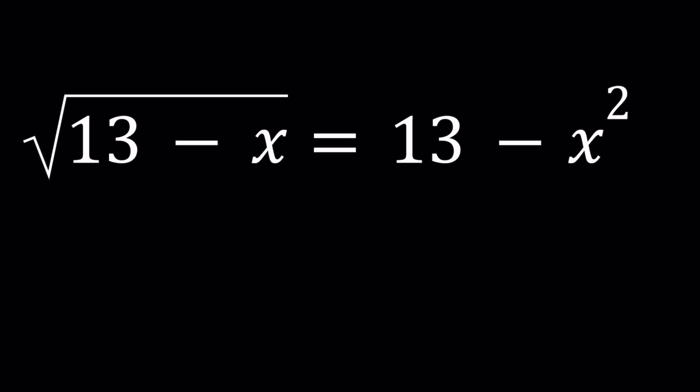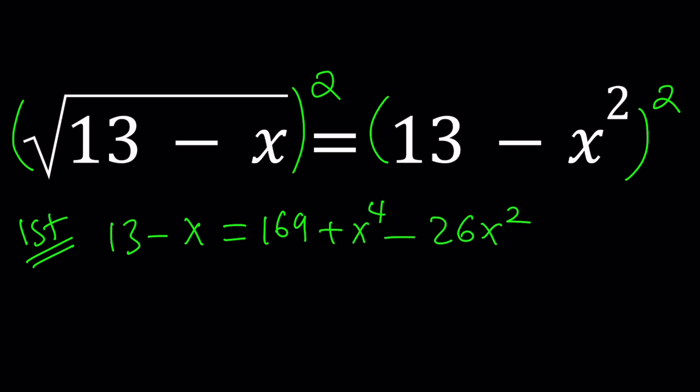First of all, I want to solve this problem by squaring both sides, because we can do that. With radical equations, that's pretty typical. We want to get rid of all the radicals and just turn this into a polynomial equation, because we know how to solve polynomial equations. The left-hand side is going to be 13 minus x, and the right-hand side is going to be 169 plus x to the fourth power minus 26x squared, if you use the formula for a minus b quantity squared.